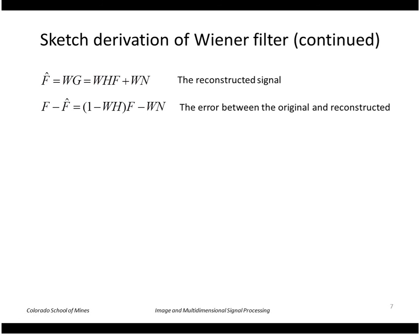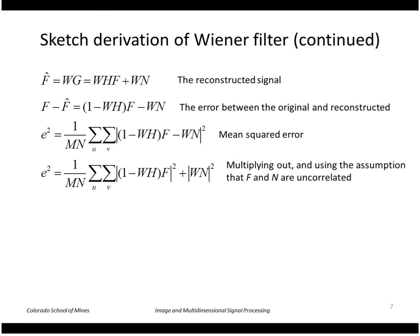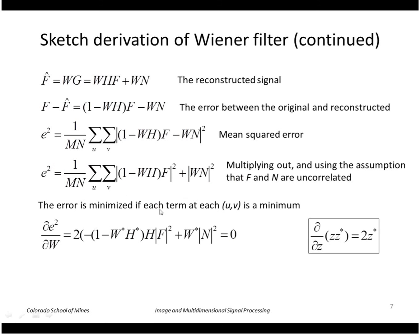I look at the error between the original and the reconstructed, so I get this expression. I square that, and because these are complex numbers, I have to take the square of the complex magnitude. Now I multiply out this and use the fact that the original image and the noise are uncorrelated. So this is a pretty good assumption. Any cross products of f and n are zero. The mean squared error is minimized if each term is also minimized. I take the derivative of each term with respect to w and set that equal to zero. Here I use the fact that taking the partial derivative of z and z conjugate is just 2 times z conjugate.